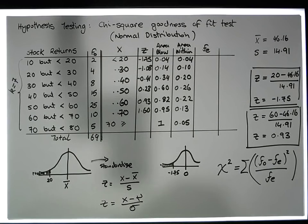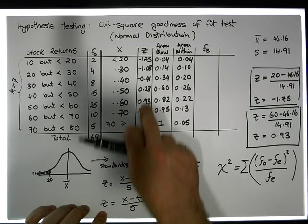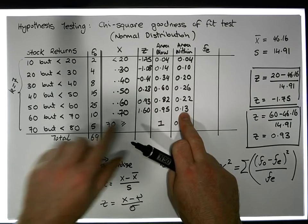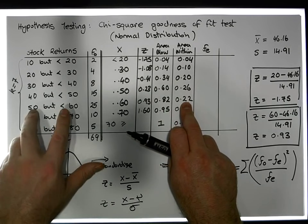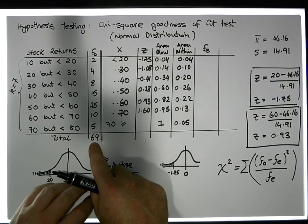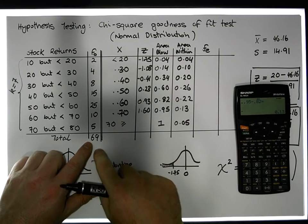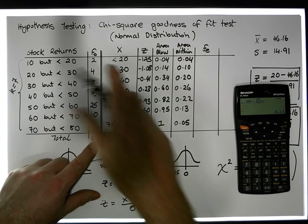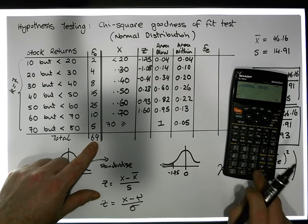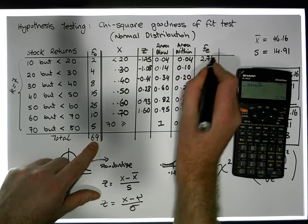From a percentage perspective, we'd expect — based on the z-scores, the areas to the left-hand side, and the areas within the intervals — 13% of observations to be between 60 and 70, 22% to be between 50 and 60, 26% between 40 and 50, and so on. There were 69 observations, so this is the proportion we'd expect. For example, 0.04 represents 4%, so we'd expect 0.04 times 69, which gives us 2.76 observations less than 20.